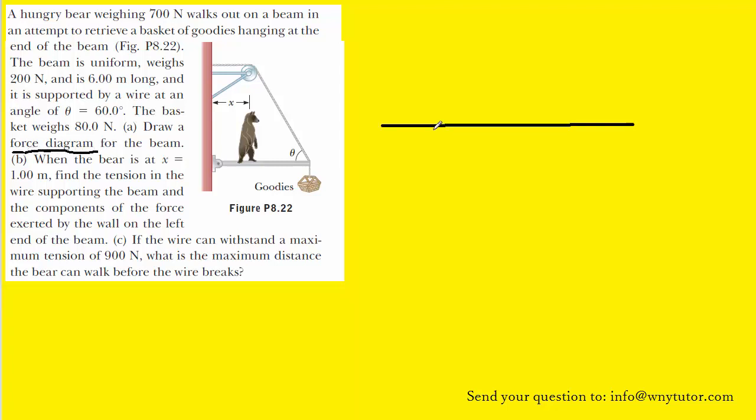Now, because there is a bear standing on the beam, the weight of the bear is going to press down on the beam. The beam itself has its own weight, which acts right at the center. We have a basket of goodies hanging down, and so there's a weight there as well.